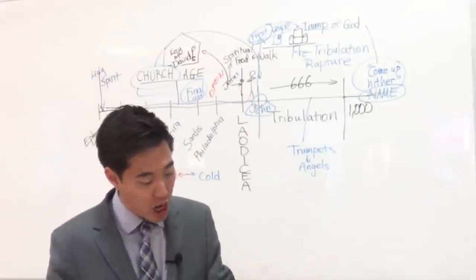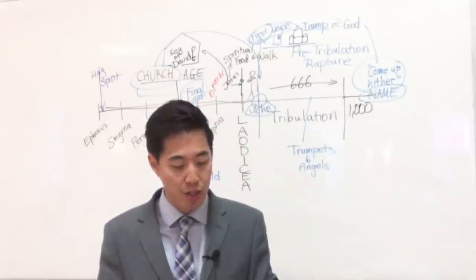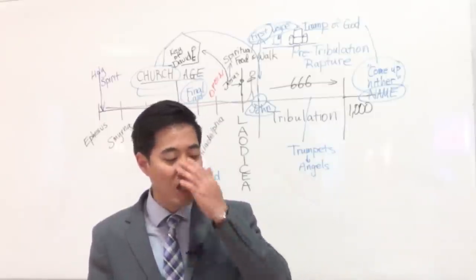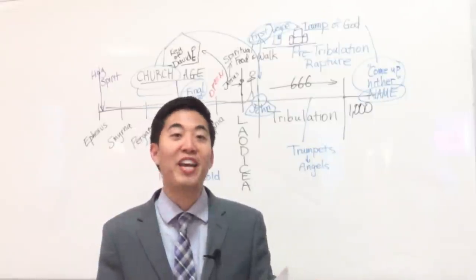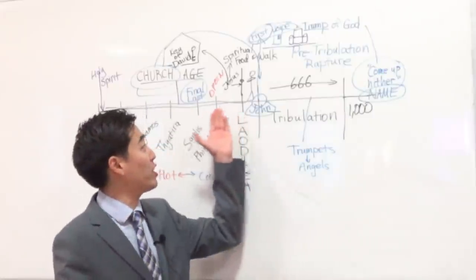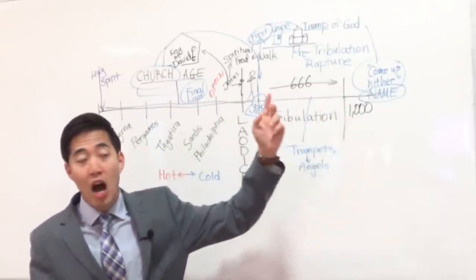But John, at Revelation chapter 4 verse 1, that's the beginning for him. That's the first voice. Why? Because read the last part of verse 1: I will show thee things which must be hereafter. See, that's the first of a series of the end times where God is going to give out several voices.